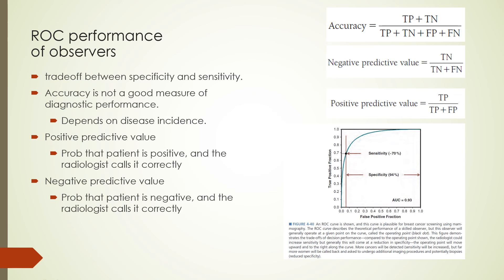Another performance measure is accuracy. But accuracy is not a good measure of diagnostic performance. Accuracy depends on disease incidence. A low disease incidence will produce 100% accuracy if all cases are just called negative or normal. As an example, consider mammography where there is approximately a 3 in 1,000 breast cancer incidence in the screening population. If a radiologist just called all cases negative without looking at the images, accuracy will be approximately 99.7%. So, in this case, the specificity will be 100%, but the sensitivity will be zero, which means the few positive cases will not be detected. Rather than using accuracy as a measure of diagnostic performance, we can use the positive predictive value. This refers to the probability that a patient is positive and the radiologist calls it positive. On the other hand, the negative predictive value refers to the probability that the patient is negative and the radiologist calls it negative.